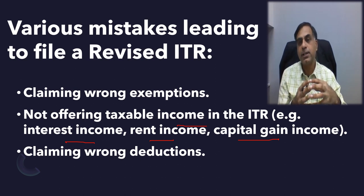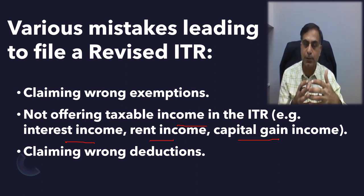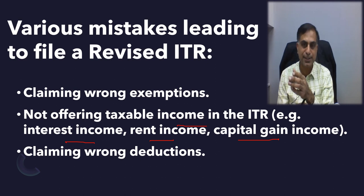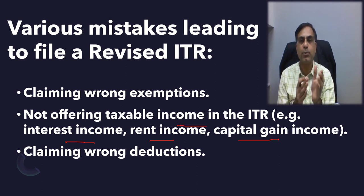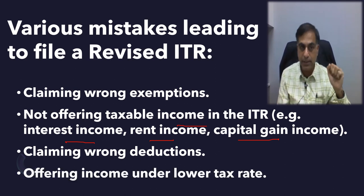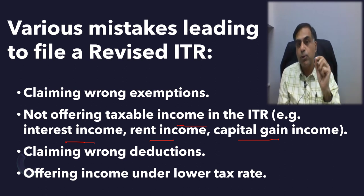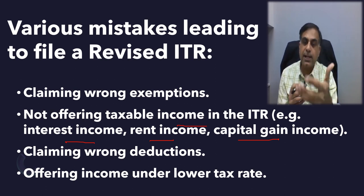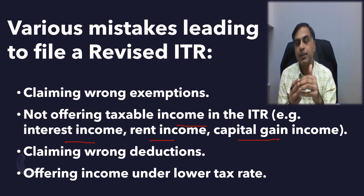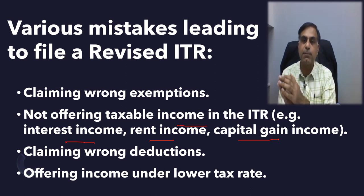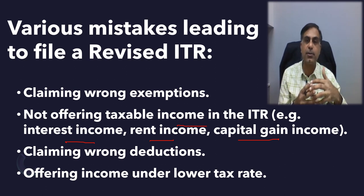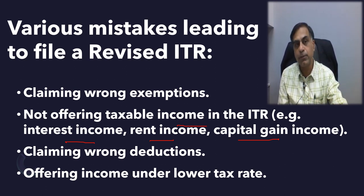Sometimes people claim wrong deductions — it could be under 80C or 80D. For example, a person who did not pay life insurance premium during the financial year but paid it late with interest is not eligible to claim it, yet included that amount as a deduction under 80C. That is a wrong deduction and such a person should think of filing a revised return. Another issue is offering income under a lower tax rate — for instance, earning capital gains taxable at 20% but offering it at 10% or 15%. If such issues exist in your original return, you should think of filing a revised return.